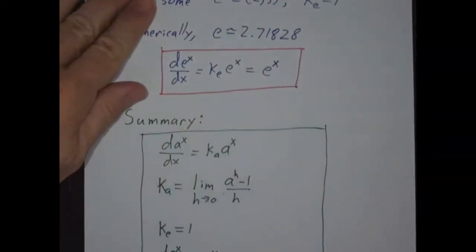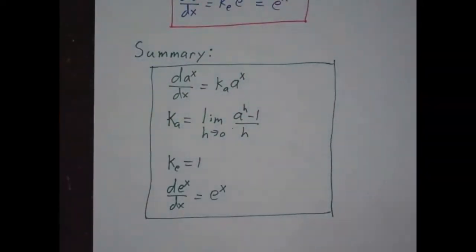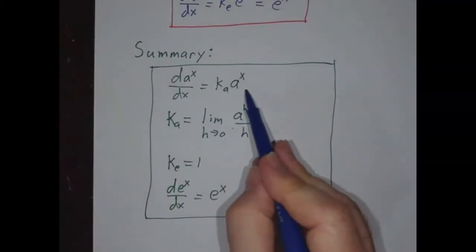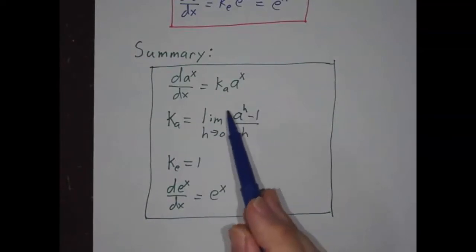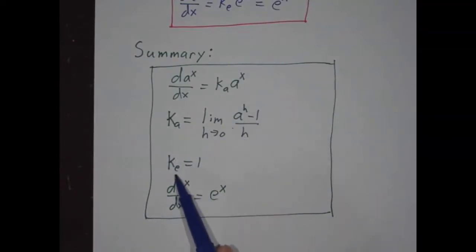So in summary, the derivative of any exponential is a constant times that exponential. That constant is this funny limit. When a is e, the constant is 1. And so the derivative of e to the x is just e to the x.